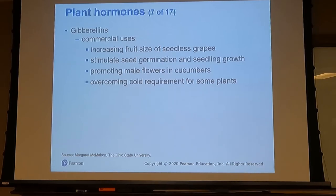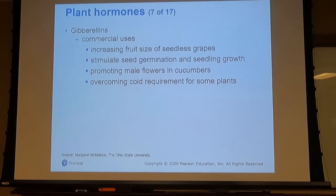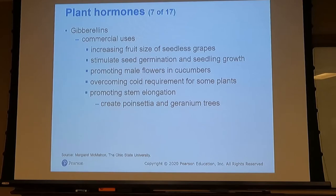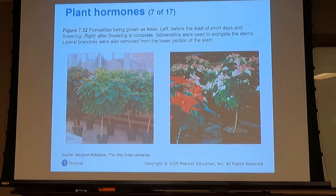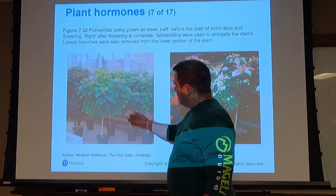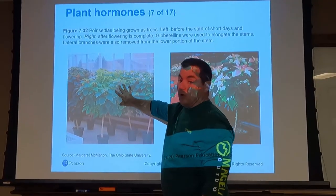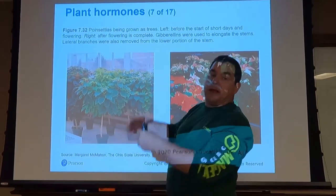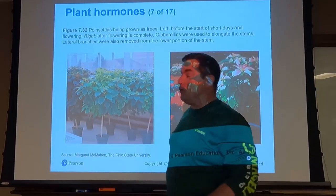Gibberellins have commercial uses such as increasing fruit size for grapes, promoting seed germination and seedling growth, and promoting flowering in cucumbers. They can also be used to overcome the cold requirement for some plants — for instance, spraying gibberellic acid on satsuma trees might help minimize or shorten that cold requirement. They're also used for stem elongation in poinsettias or geraniums, growing them as trees rather than pot plants.